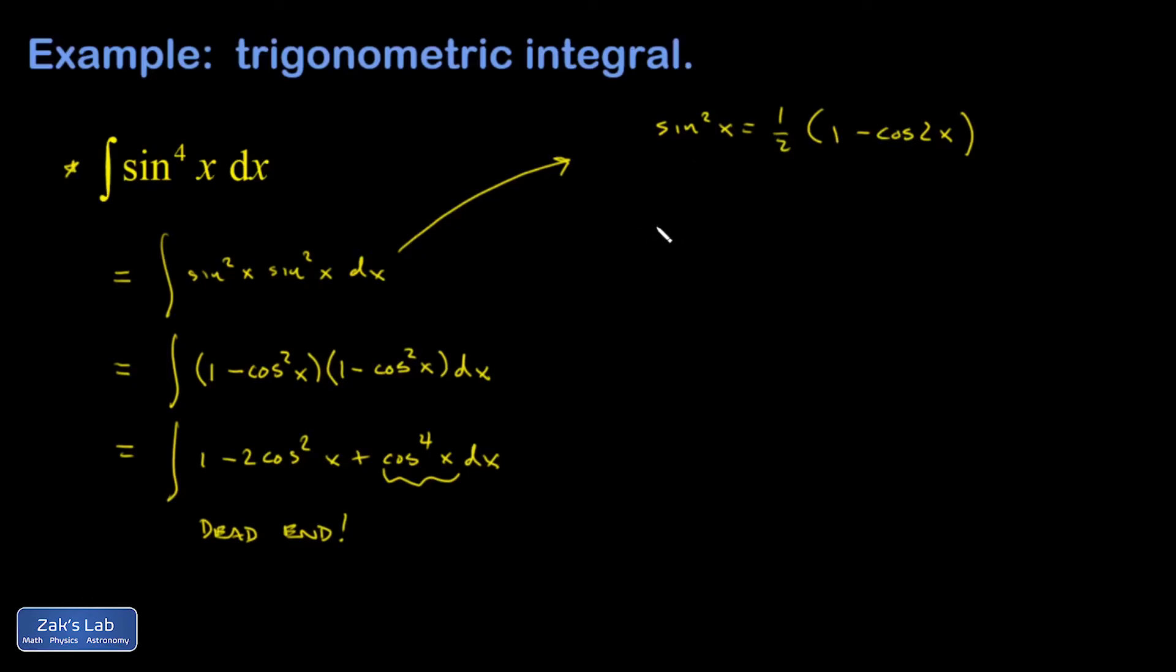So what happens if I do that to this integral? So, I'll get 1 half, 1 minus cosine 2x, multiplied by another copy of the same thing, 1 half, 1 minus cosine 2x.